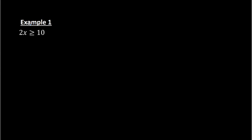For example, let's say we had 2x is greater than or equal to 10. I solve this the exact same way I'd solve an equation. We have 2 times x, so to get rid of the 2 I need to divide. So I divide both sides by 2. On the left side I have x, and on the right side I have 5. So my answer is x is greater than or equal to 5.